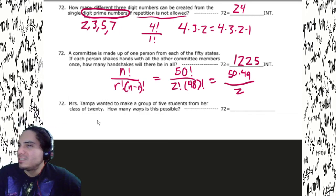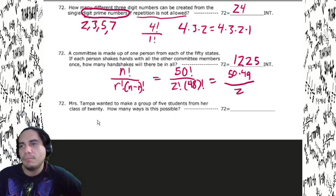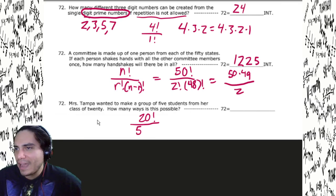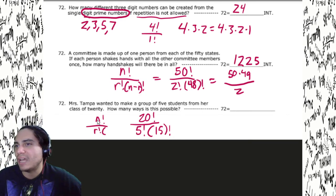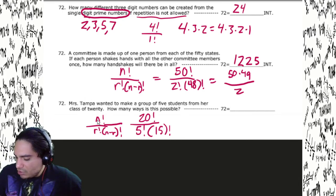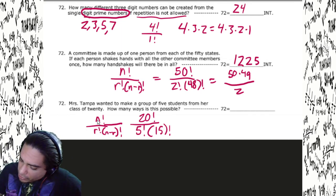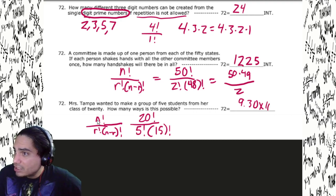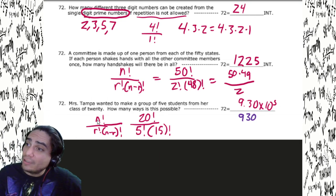Mr. Tampa wants to make a group of five students from a class of 20. How many ways is this possible? Order doesn't matter — it doesn't matter if you're picked first, second, third, fourth, or fifth; you're in the group. So we use the combination formula: 20! / (5! × 15!). That's n! / (r! × (n−r)!). We go ahead and compute it — it's not an integer problem — so we get 9.30 times 10 to the 5th, or in standard form: 93,000.